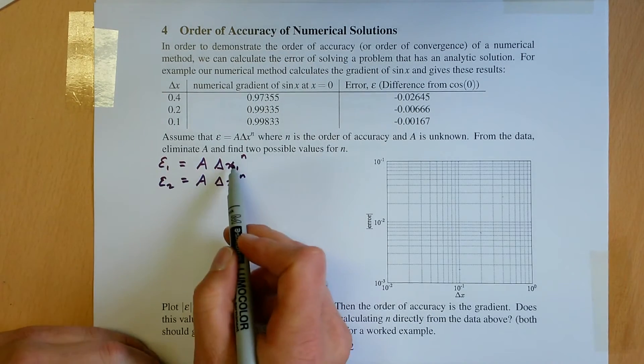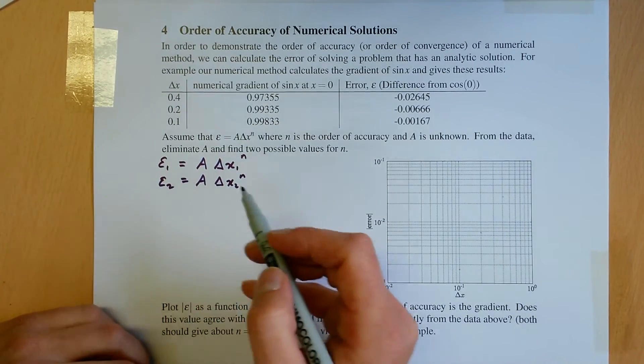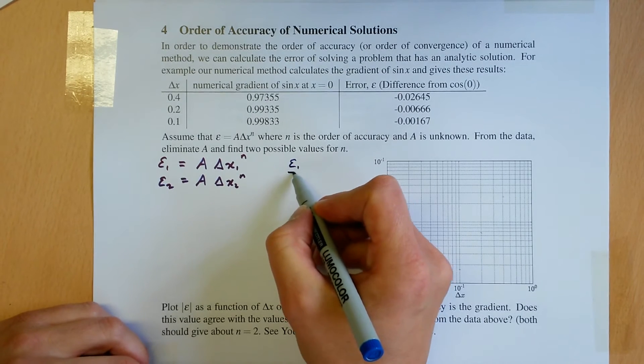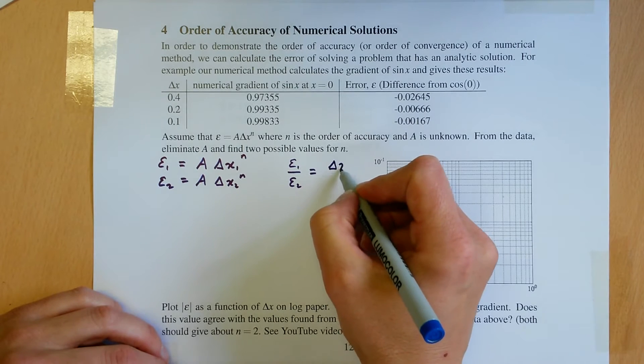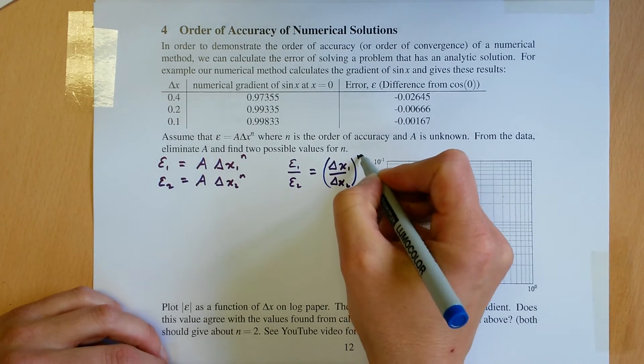Epsilon 1, epsilon 2, delta x1, delta x2 are known from here. So we can do this equation divided by that equation. Epsilon 1 divided by epsilon 2, this will eliminate A. Delta x1 divided by delta x2, all to the power n.